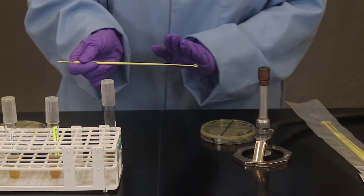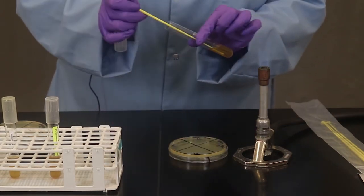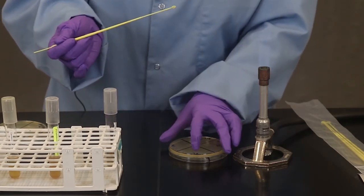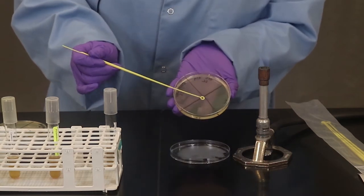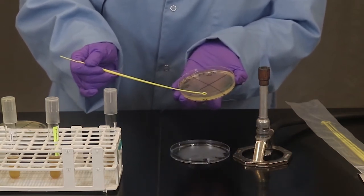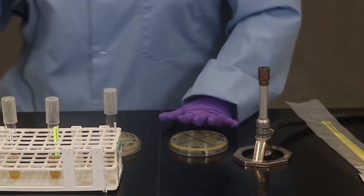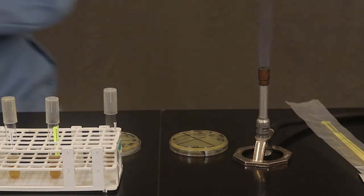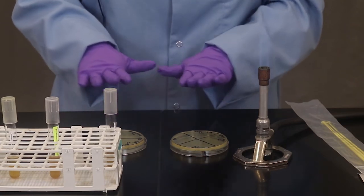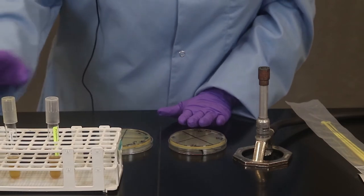That's one petri plate. As long as I don't touch this loop to anything else I'm going to repeat with the second. If you think you've contaminated your loop you need to take a new one. So remember here we're not looking for single colonies. We're not looking to see if it's a pure culture. In this case we're just asking the question can the bacteria grow in an aerobic and/or an anaerobic condition. So we're just looking to see if it can grow.